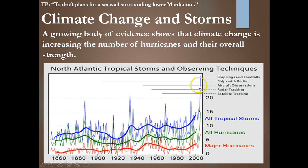It actually goes well off the graph — maybe 30 tropical storms. That's pretty intense. So maybe something new is happening, something that hasn't happened in the last 150 years. But it could be an anomaly. As time goes on, I'm sure this spike can be put into a bigger context.